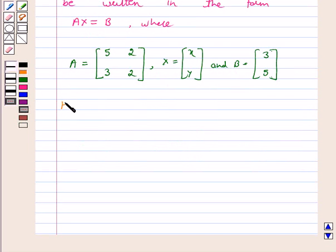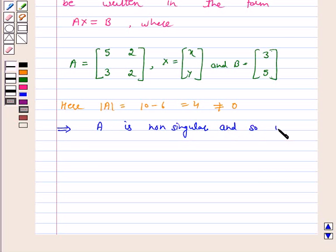Here determinant A is equal to 10 minus 6 which is equal to 4, that is not equal to 0. This implies A is non-singular and so its inverse exists.